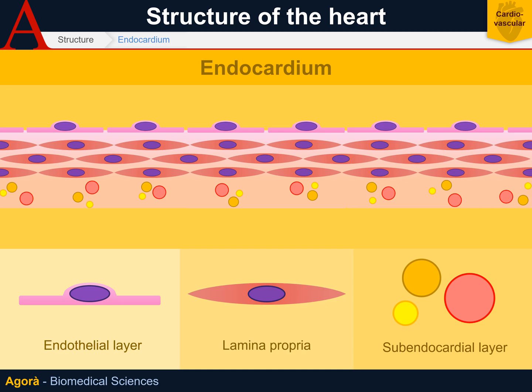In the sub-endocardial layer there are small vessels — the marginal branches of the coronary arteries — and small nervous fibers also called the Purkinje fibers, which are the marginal branches of the cardiac conduction system.